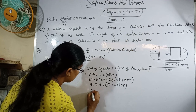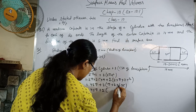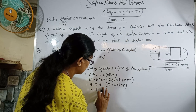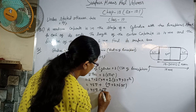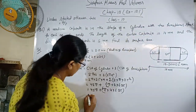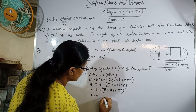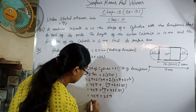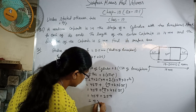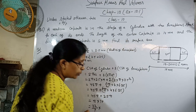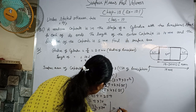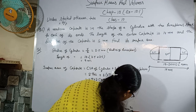45π + 25π = 70π। Pi की value 22 upon 7 रखने पर: 70 × 22/7 — 70 और 7 cancel होंगे — answer = 10 × 22 = 220 mm² आ गया।